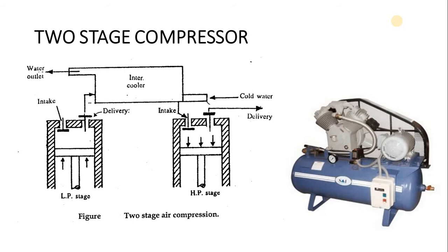Here, instead of one cylinder, there are two cylinders along with pistons. The left side is called the low pressure stage compressor, and the right-hand side is the high pressure stage, because the air pressure in the second stage is more as compared with the first stage.